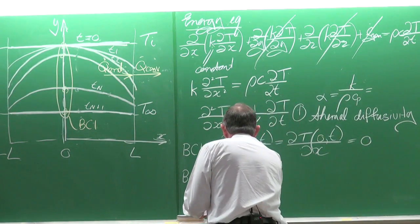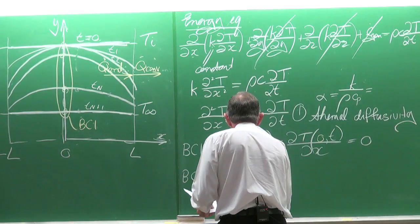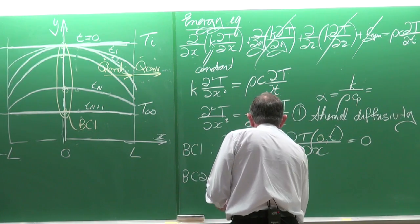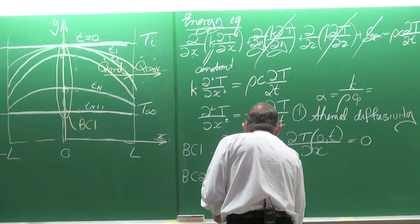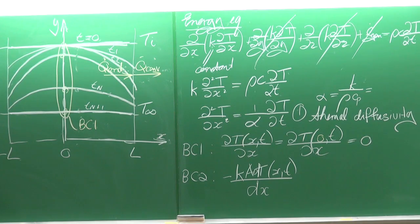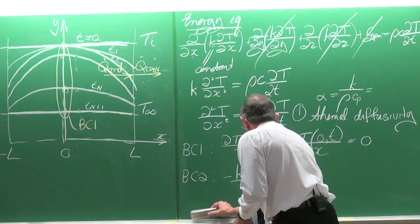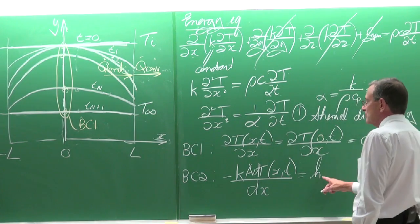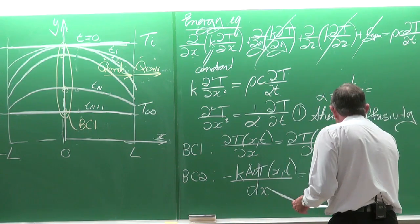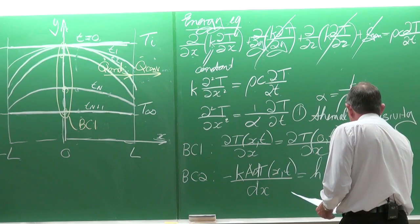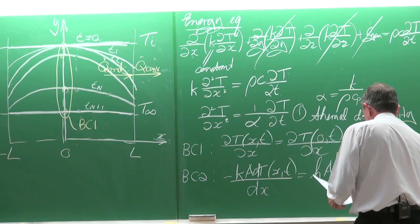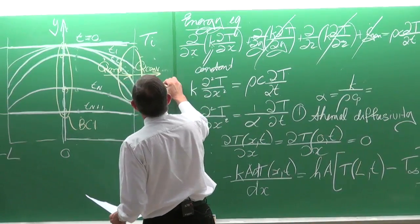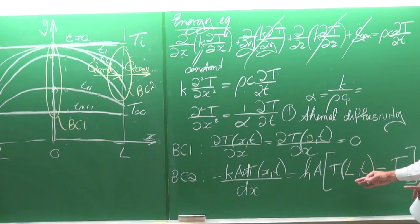The second boundary condition uses the conditions on the side of the wall: the conduction heat transfer must equal the convection heat transfer. We write: −k·A·(∂T/∂x) at x=L, t equals h·A·(T(L,t) − T∞). The conduction heat transfer equals the convection heat transfer at the surface.